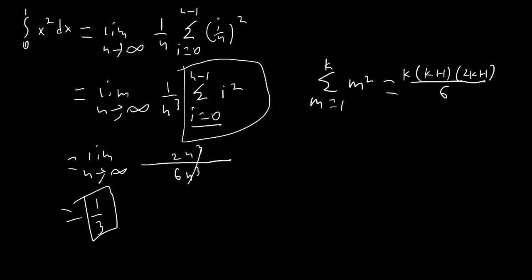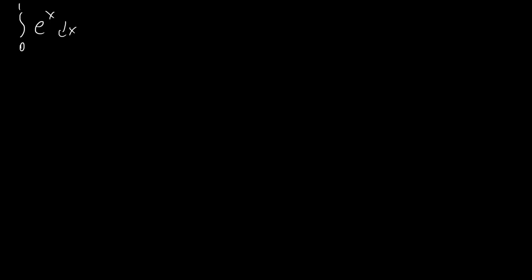That's a pretty straightforward example. Now let's jump into some more difficult examples. The next one is finding the integral from 0 to 1 of e to the x dx. I can't remember what the integral of e to the x is, so I'm going to use the Riemann sum definition: the limit as n goes to infinity of 1 over n times the sum from i equals 0 to n minus 1 of e to the i over n.